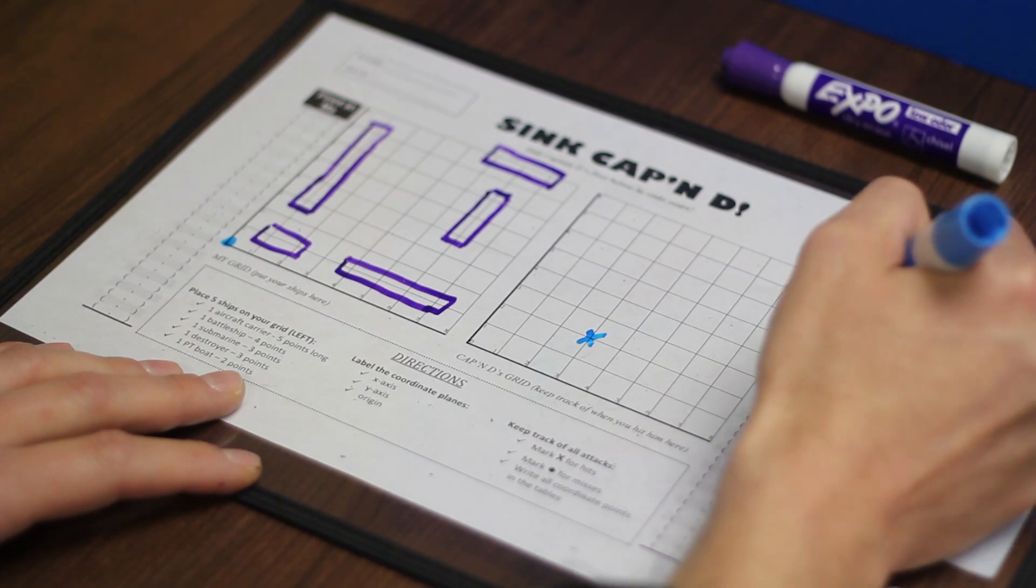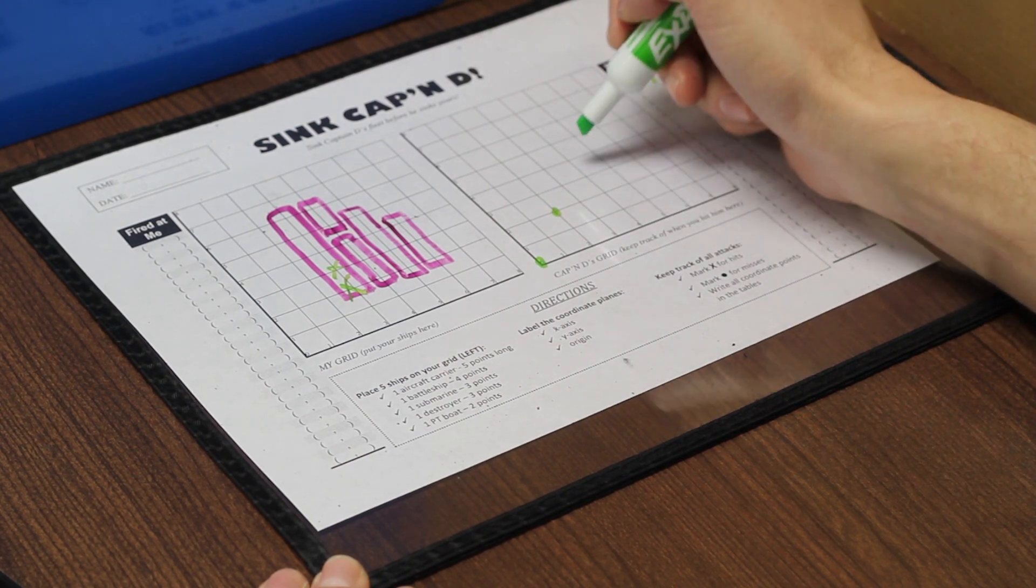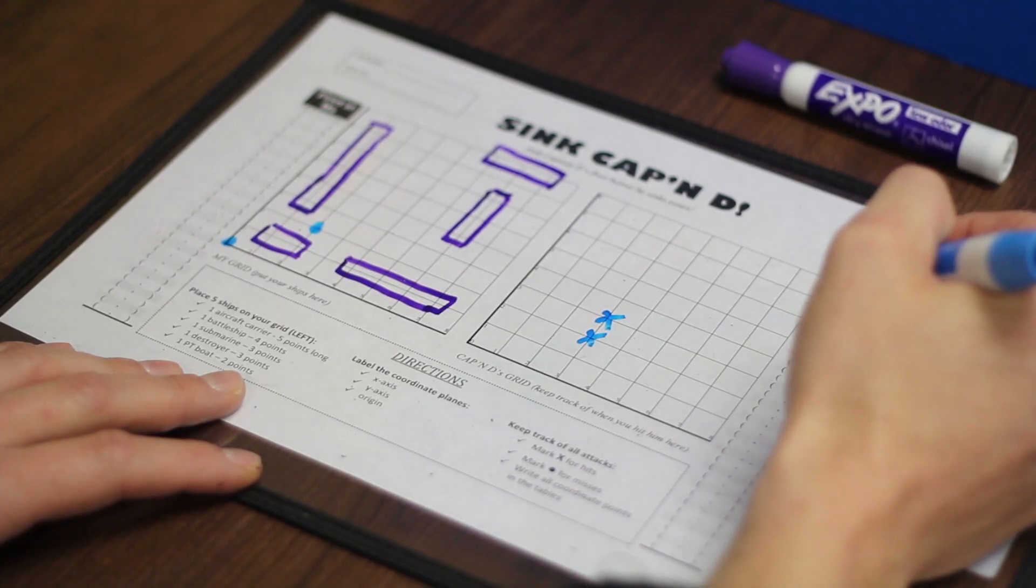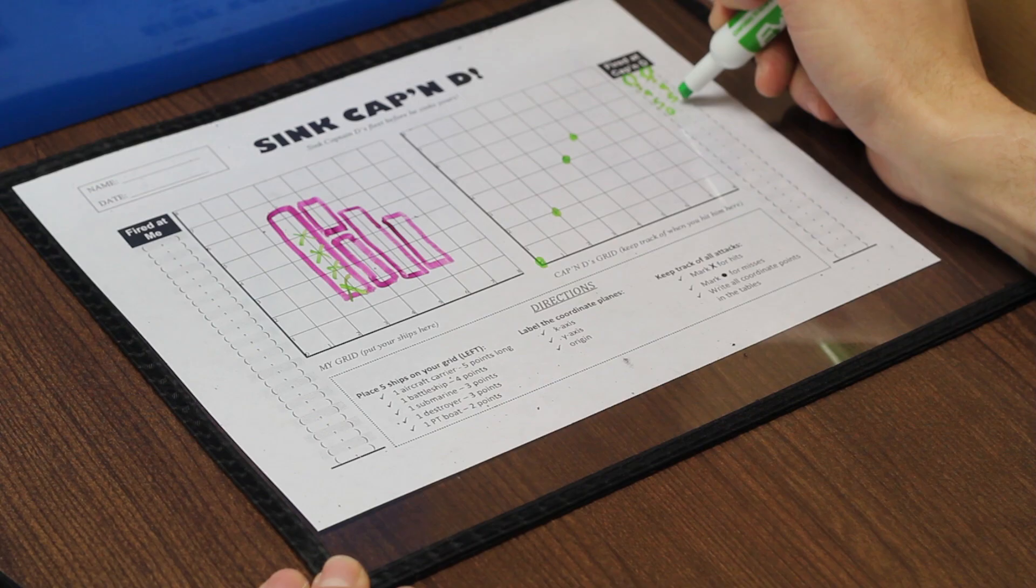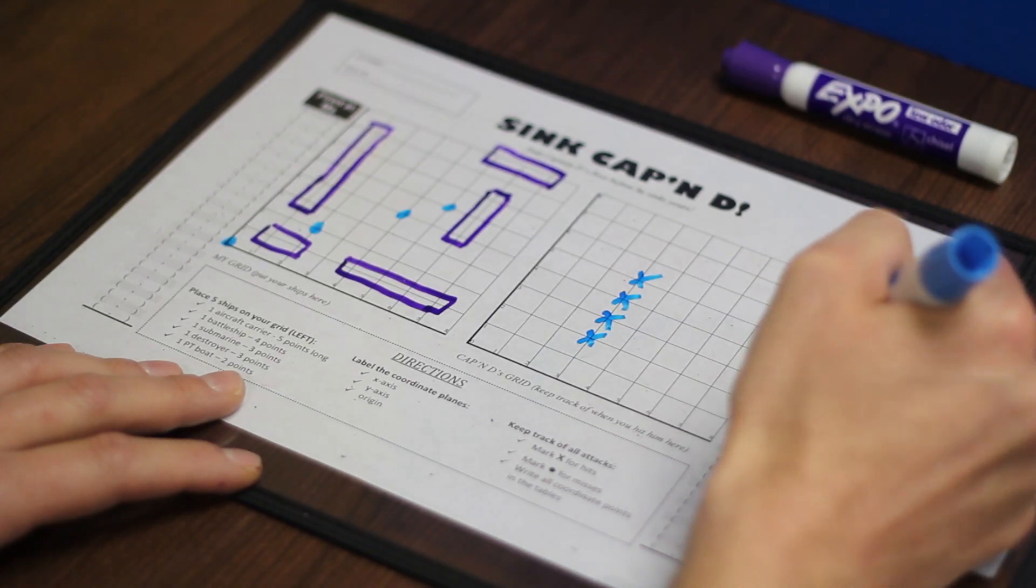Miss. Three, three. Hit. Four, four. Miss. Three, four. Hit. Zero. Miss. Three, six. You sunk my aircraft carrier.